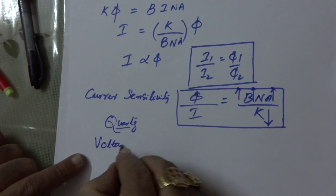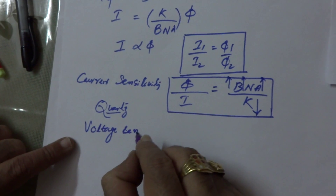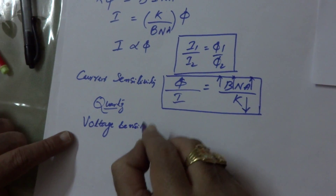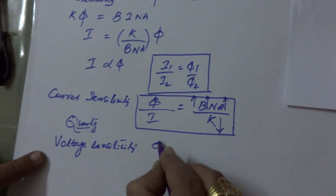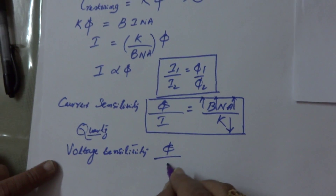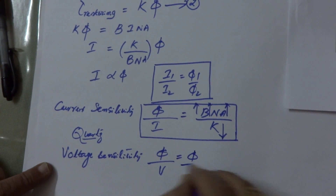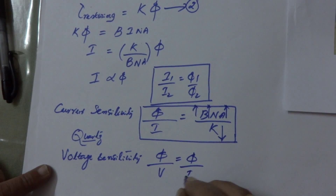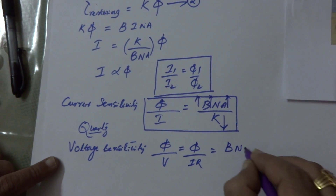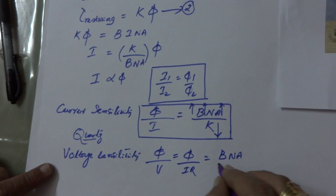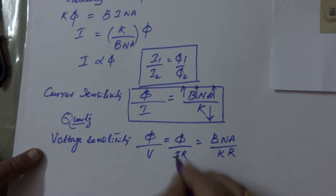If you want to discuss the voltage sensitivity, that voltage sensitivity is nothing but phi by V. The formula for it will be B N A divided by K R, because phi by I equals B N A by K, and V equals I R.